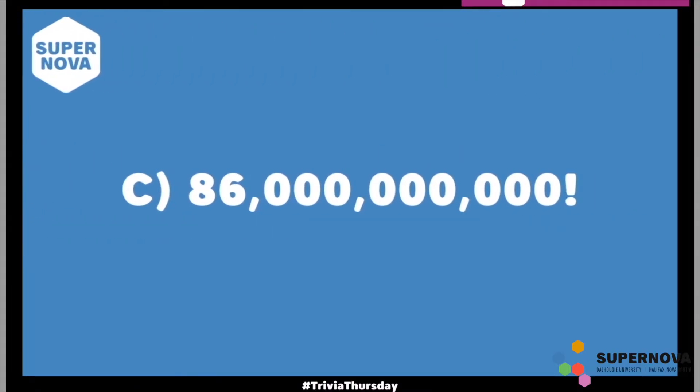I hope you've picked an answer, because I'm going to give it away now. The number of neurons in the human brain is 86 billion — that's a lot of neurons. If you want to know an animal that has more neurons than a human, you have to think big, really big. One animal that has more neurons than a human is the African elephant, which has about 257 trillion neurons in their whole bodies.